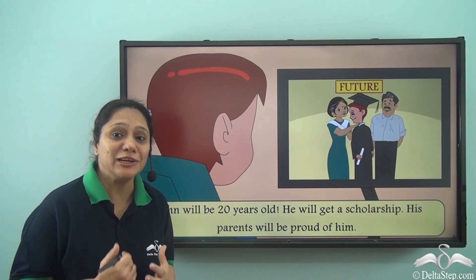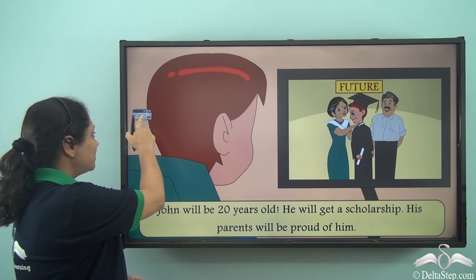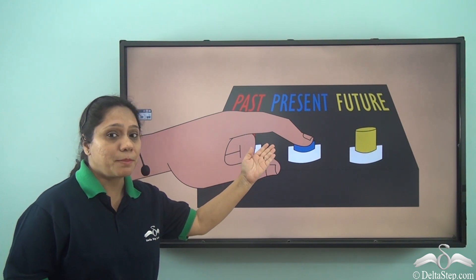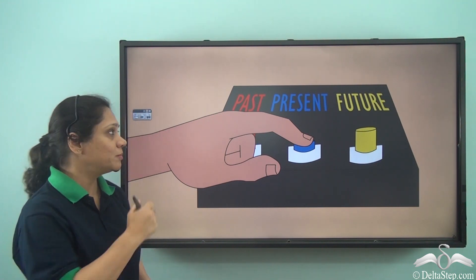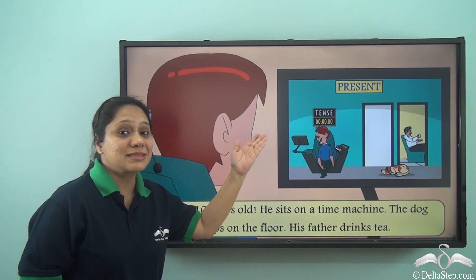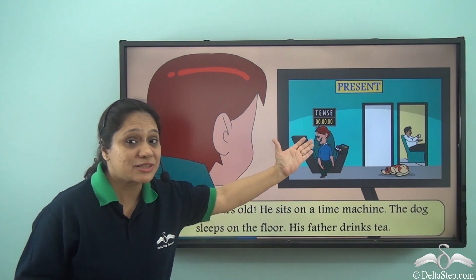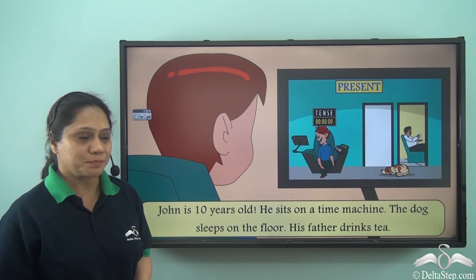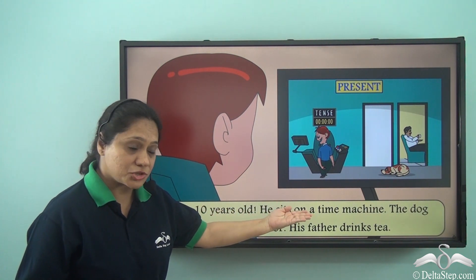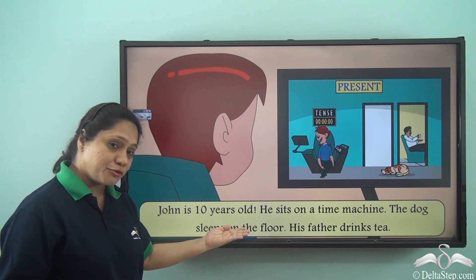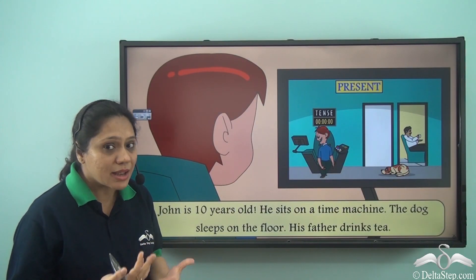John gets really excited now. He is wondering what the other button does. So he presses the button which has 'present' written next to it. And what does he see on the screen now? He sees exactly what is happening at that moment. He sees himself sitting on the time machine. John is 10 years old. He sits on the time machine. The dog sleeps on the floor. His father drinks tea. Exactly what is happening now.